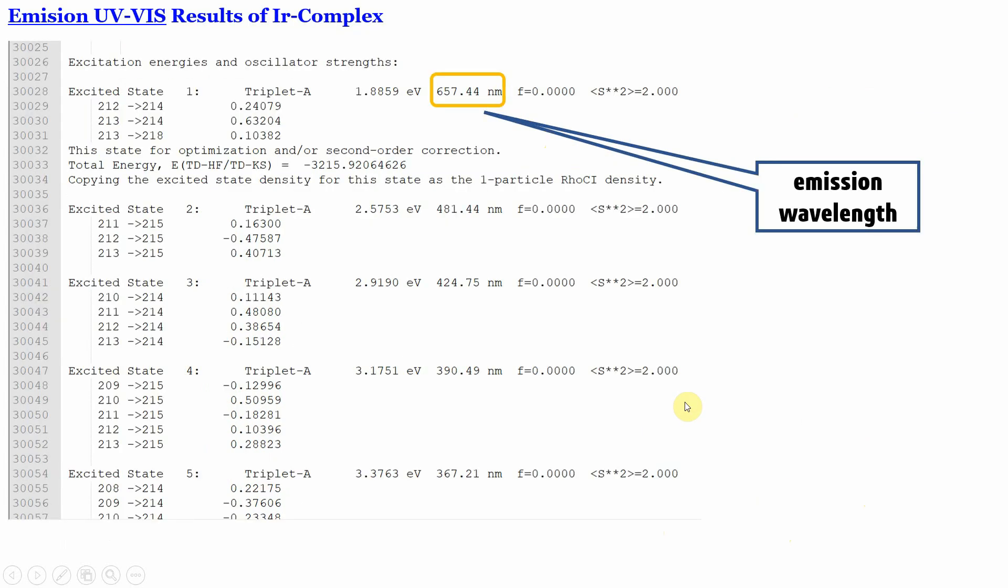After completion of the calculation, you will get the output file. You can find the emission wavelength of the iridium complex. Here you can see 657.40 nanometers.